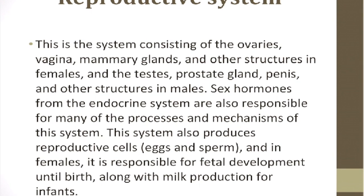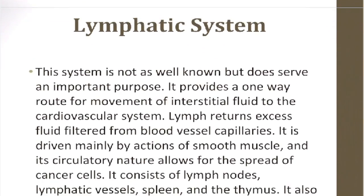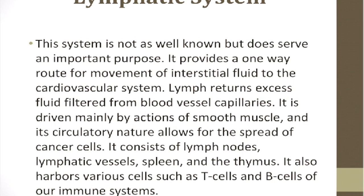The reproductive system consists of the ovaries, vagina, mammary glands, and other structures in females, and the testes, prostate gland, penis, and other structures in males. Sex hormones from the endocrine system are also responsible for many of the processes of this system. It produces reproductive cells — eggs and sperm — and in females is responsible for fetal development until birth and milk production. The lymphatic system provides a one-way route for movement of interstitial fluid to the cardiovascular system. It consists of lymph nodes, lymphatic vessels, spleen, and thymus, and harbors T cells and B cells of our immune system.